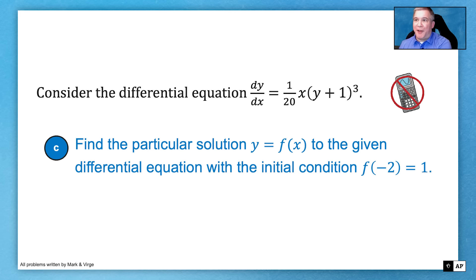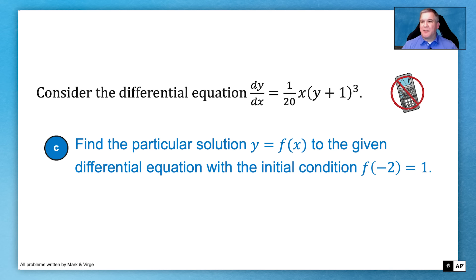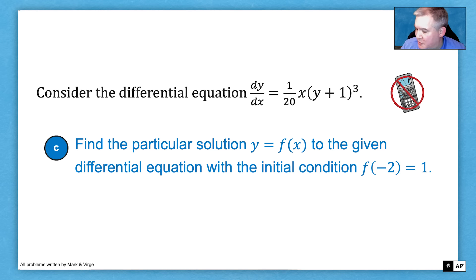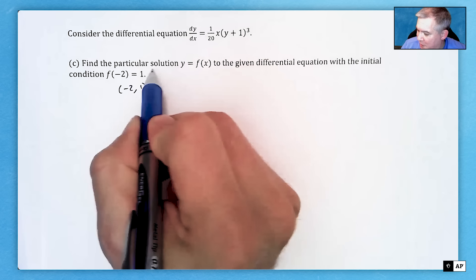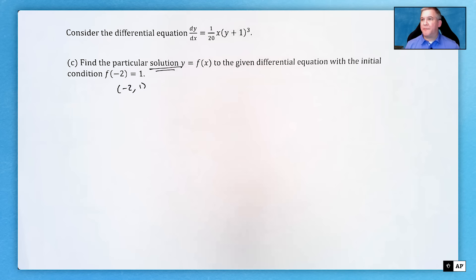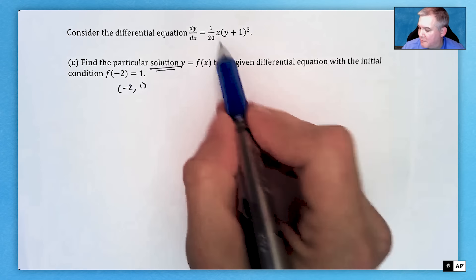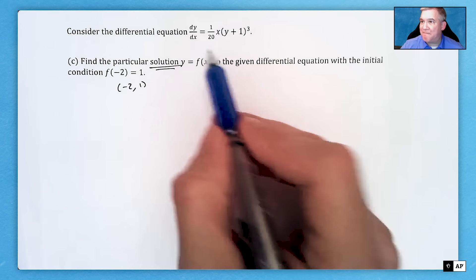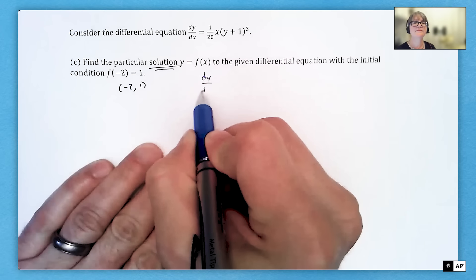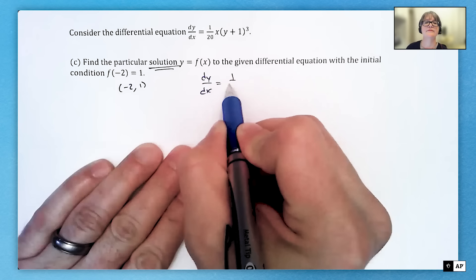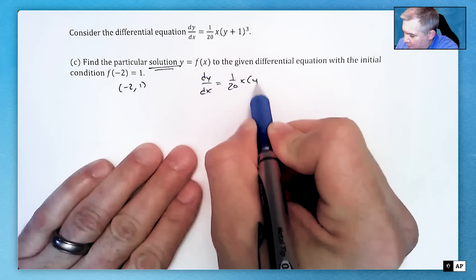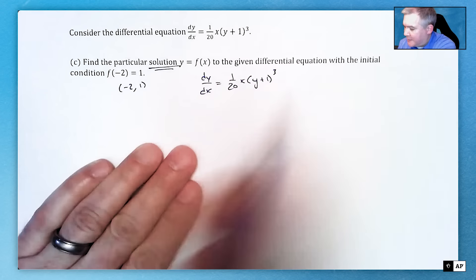Part C says: find the particular solution y = f(x) to the given differential equation with the initial condition (-2, 1). This time they actually want us to solve it. The method is separation of variables — we have independent variable x and dependent variable y, and we separate them to opposite sides.